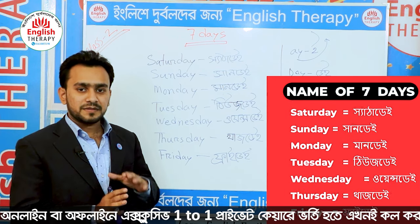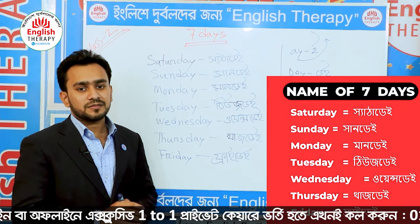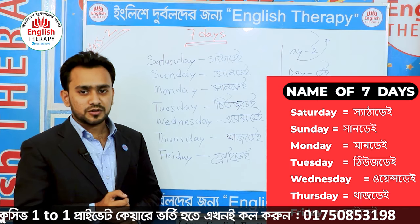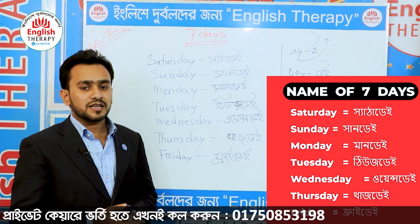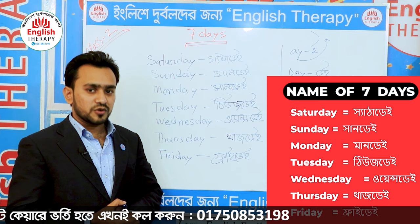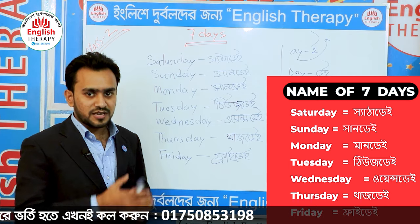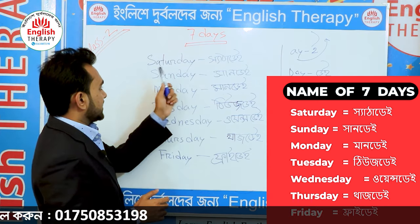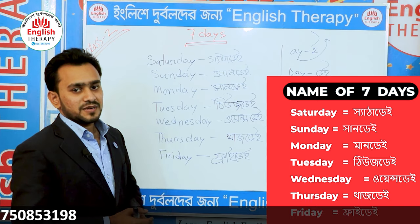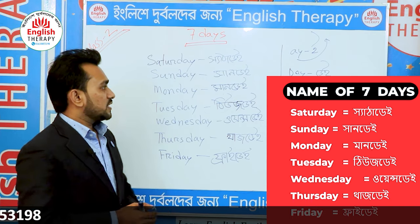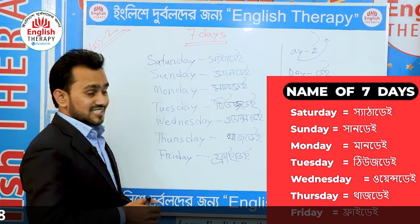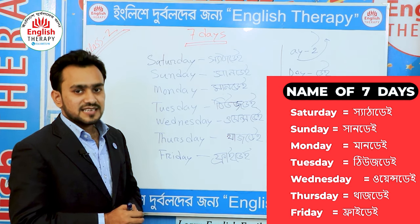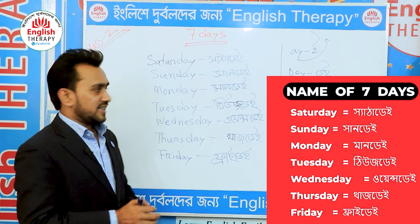We will learn how to pronounce the 7 days in both British and American English. We will start — not Monday — but now it will be Saturday. Saturday, Saturday, Saturday.